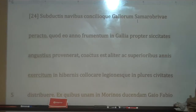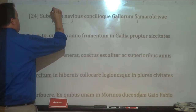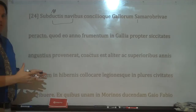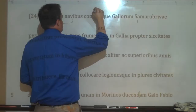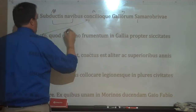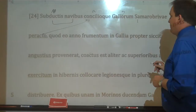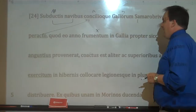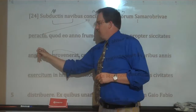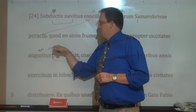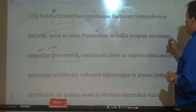We have 'Subductis' — a nice ablative absolute here. So 'with the ships having been led under' means the ships having been beached, being brought up on the shore. With the Council of the Gauls having been finished at Samarobriva, because in that year the grain had grown more narrowly — 'angustius,' a comparative adverb from 'angustus' — in Gaul on account of drought.